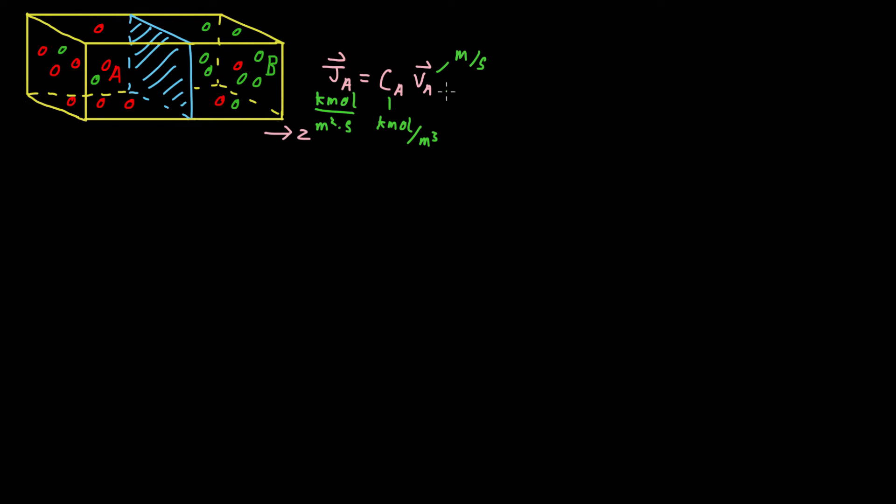The change in the flux is primarily decided by the change in the average velocity of the atoms. Now we could do the same for species B. The molar flux of species B is equal to the molar concentration of species B multiplied by the velocity of species B.